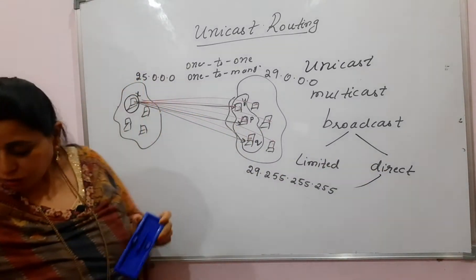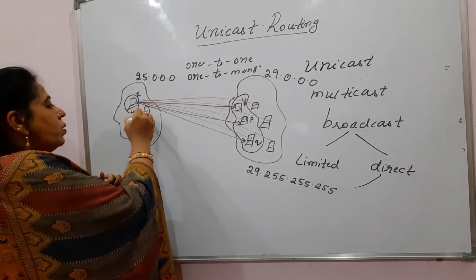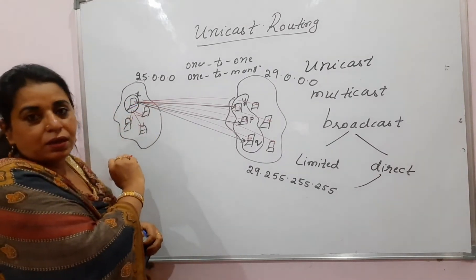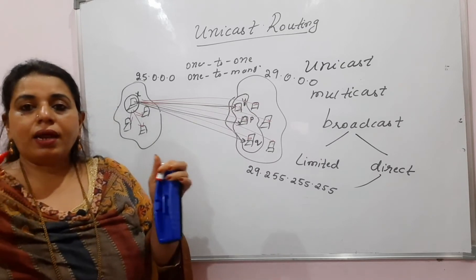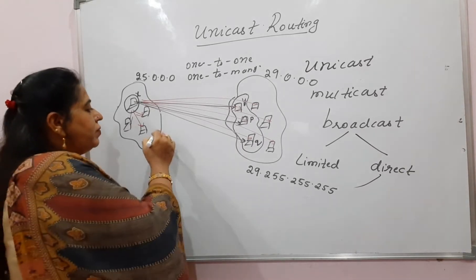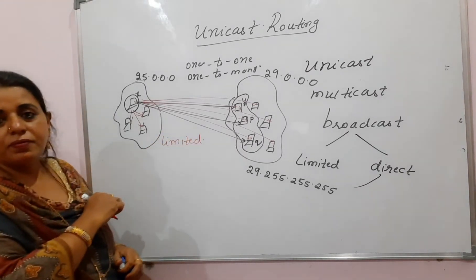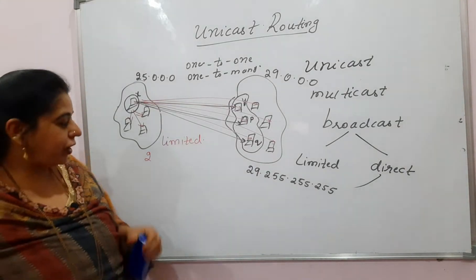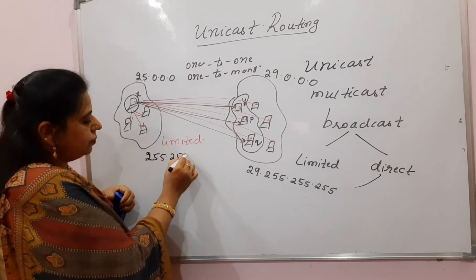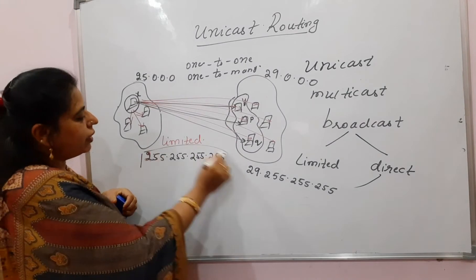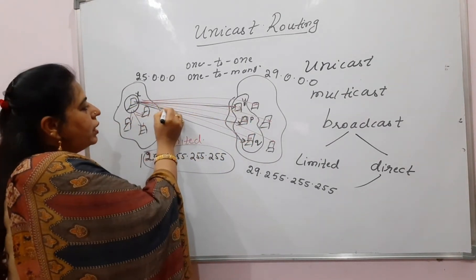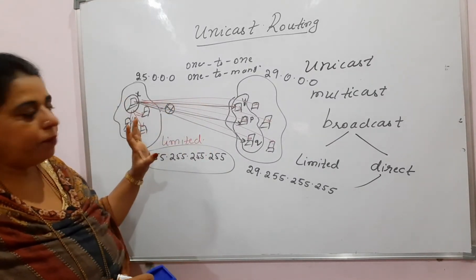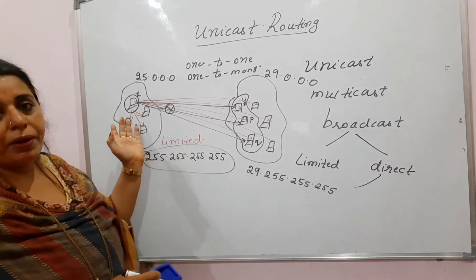Limited broadcast is when a host wants to send a packet to all other hosts in its own network only — not to hosts in any other network. It limits the transmission of the packet to its own network, which is why it's called limited. When sending to all nodes in this network, it uses the destination address 255.255.255.255. The router attached to this network will stop that packet from crossing — limiting the packet to this network only.